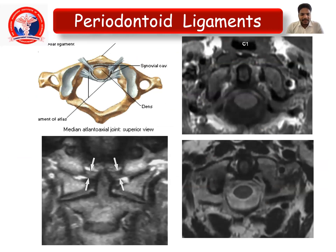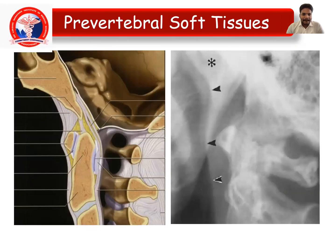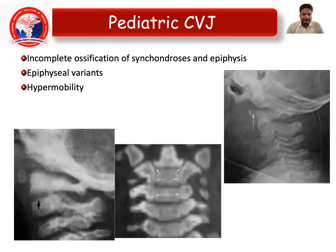This image demonstrates the periodontal ligaments and their respective relationships. In pediatric craniovertebral junction anomalies, incomplete ossification of the synchondroses and epiphyses can be seen. There can be epiphyseal variance and associated hypermobility of the cervical spine as well.